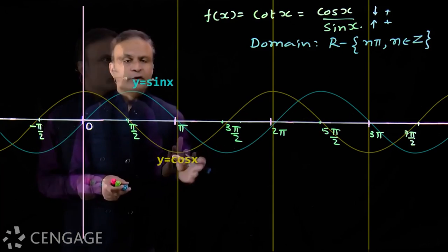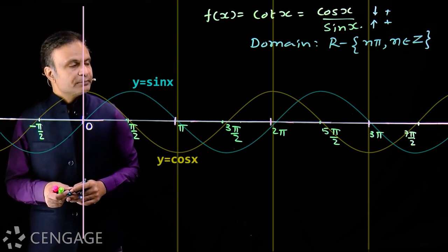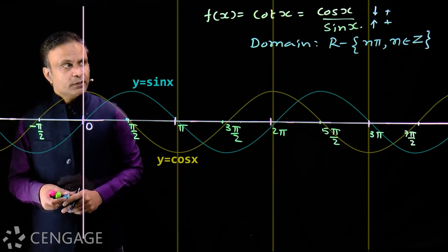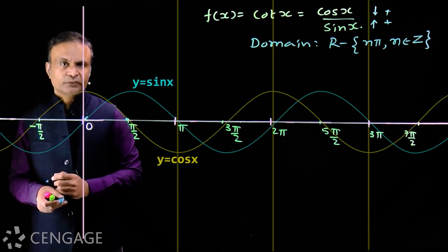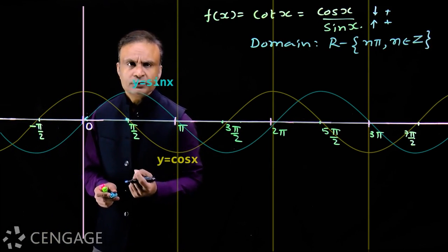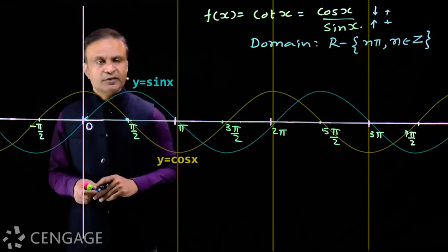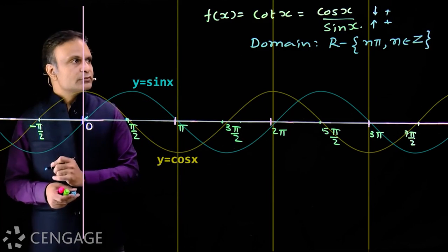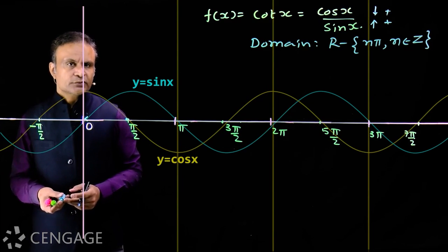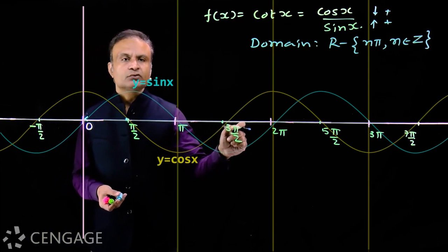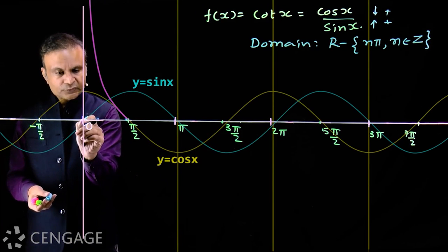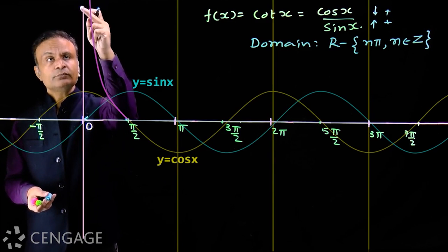At x = π/2, cot(π/2) = cos(π/2)/sin(π/2) = 0/1 = 0, so we have that point on the graph. When x tends to 0 (slightly greater than 0), cos(x) approaches 1 and sin(x) approaches 0, both positive, so the ratio tends to +∞. Therefore, the graph in the first quadrant falls from +∞, decreases continuously, and reaches 0 at x = π/2.